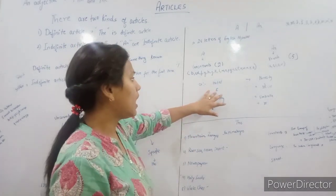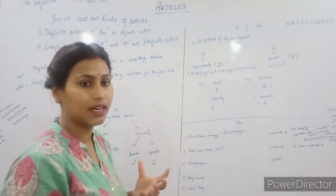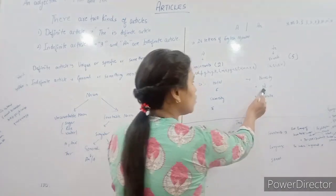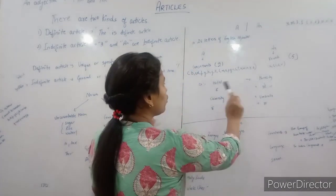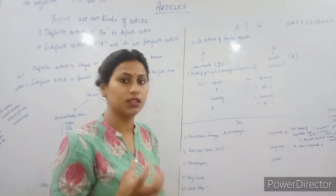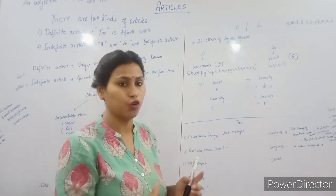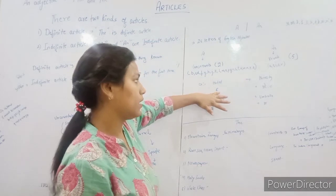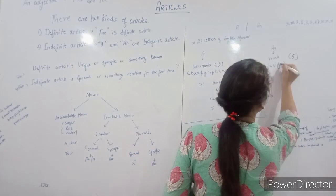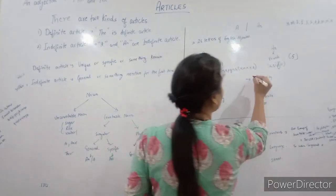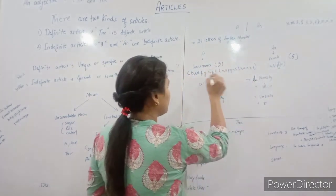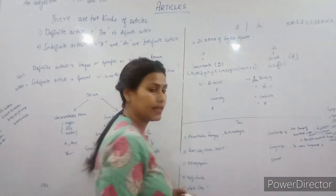In hotel, we have a consonant sound. In honesty, we have an O sound, which is a vowel sound. So don't just look at the first letter - we have to see the sound. Hotel has a consonant sound, so we use a hotel. Honesty has an O vowel sound, so we use an honesty.